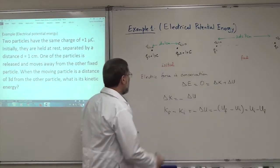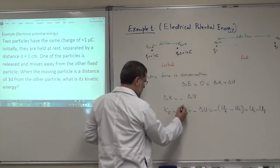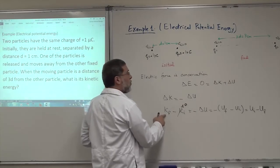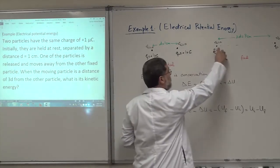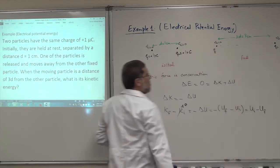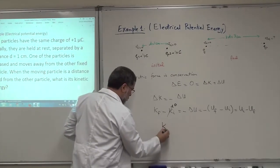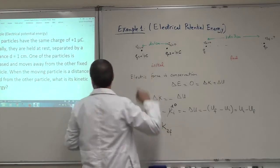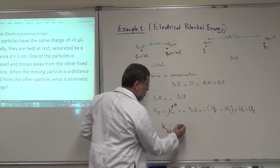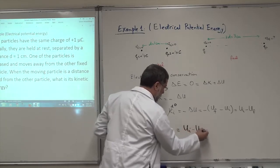Initially the two particles are at rest, so K initial is zero. Since Q1 remains at rest in the final state, K final is only the kinetic energy of particle two. So K2 final equals U initial minus U final.